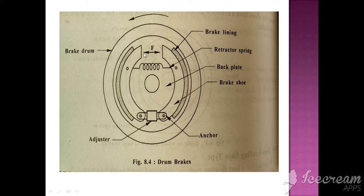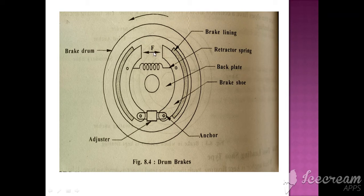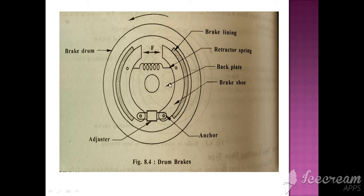When the brake shoes expand due to the application of force, this will expand and this brake lining will resist the movement of the brake drum. When hydraulic oil pressure or pneumatic air pressure comes, this expands against the retractor spring. When you release the pedal, it returns to normal position. These are the friction materials. This is the anchor which holds both brake shoes in place.